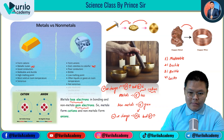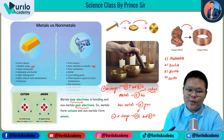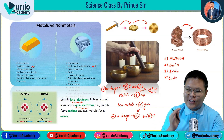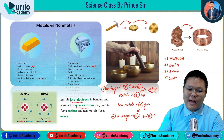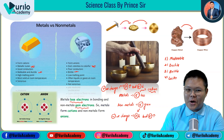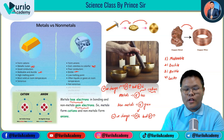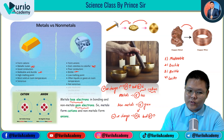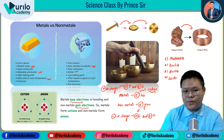These properties — malleable, ductile, brittle, and metallic luster — distinguish metals from non-metals. Metals have a high melting point while non-metals have a low melting point. Metals are solid at room temperature, but non-metals are often liquid or gas at room temperature.